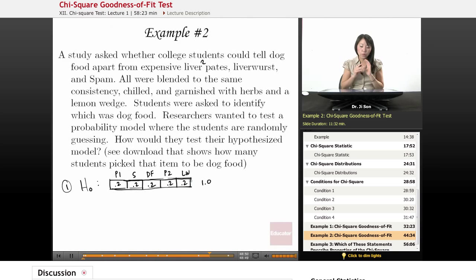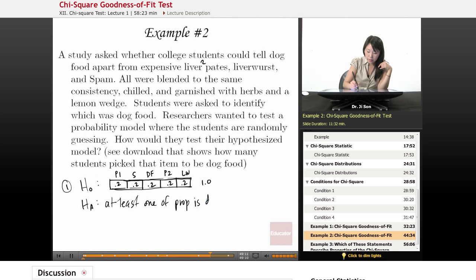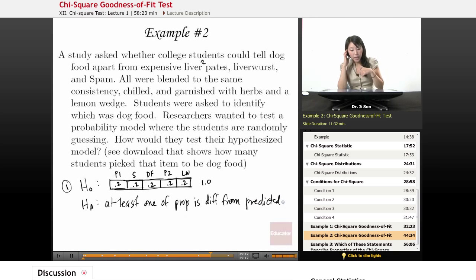Is this the right proportions for this sample? Is the sample going to match this, or be very different from this? The alternative is that at least one of the real proportions is different from predicted. We could set our alpha to be 0.05.